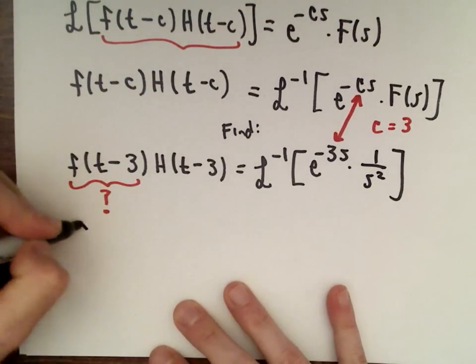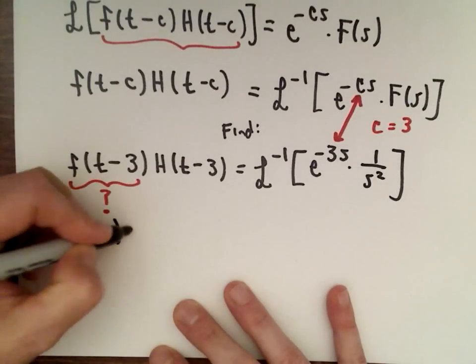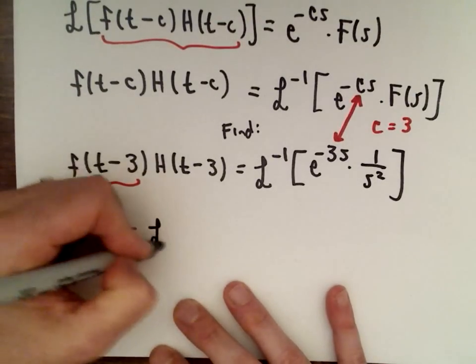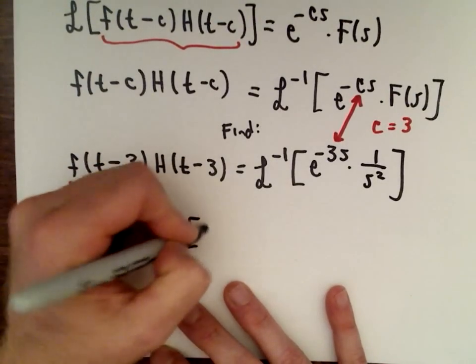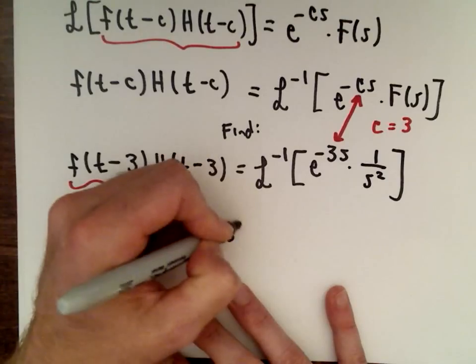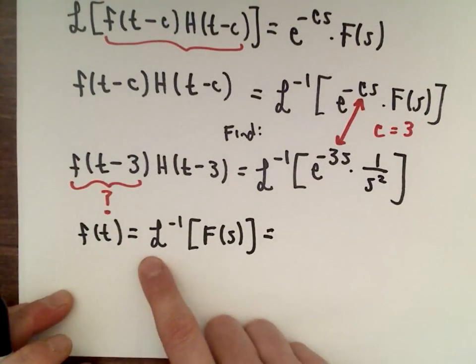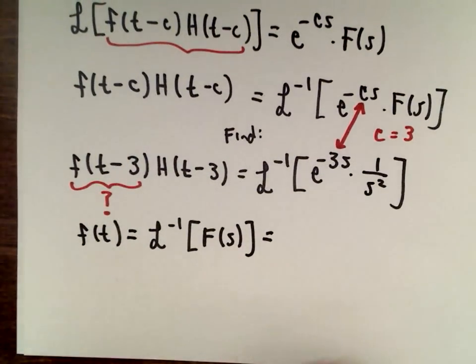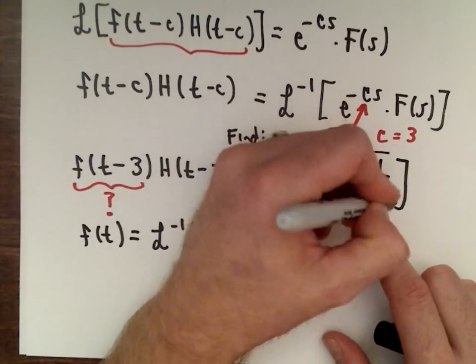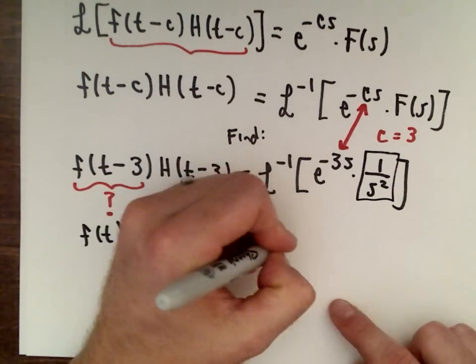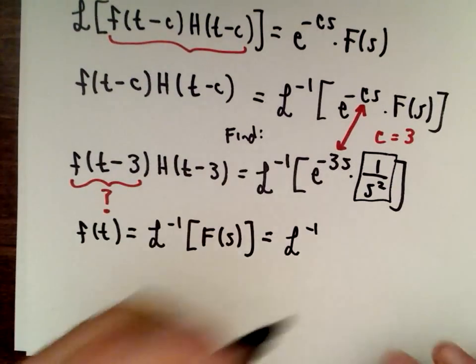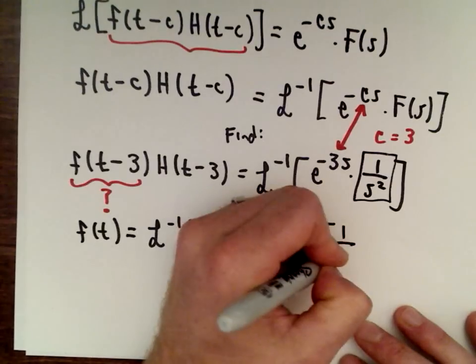Well, recall, to get f(t), f(t) is the inverse Laplace transform of F(s). So to get f(t), we just take the inverse Laplace transform of F(s). Well, F(s) is our function here, 1 over s squared. So we're just using our inverse Laplace transform of 1 over s squared.